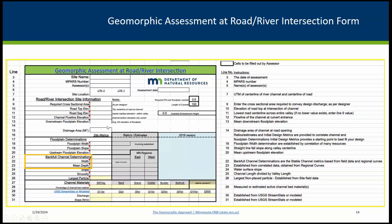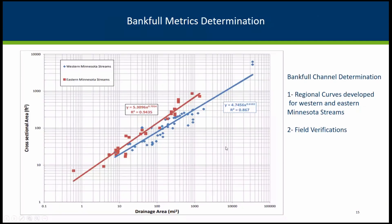The geomorphic assessment form summarizes site information, existing structure in terms of freeboard and cross-sectional area, and the bankfull information, as well as stream stat discharges and sediment-related data. It basically summarizes the imprints of the channel so that we can base the design on it. You're probably familiar with the regional curves for western and eastern Minnesota streams, which give us an idea about what those bankfull metrics are — a ballpark estimate. Then we go to the field to verify those bankfull measures.